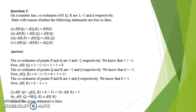Question number 2. On a number line, coordinates of P, Q, R are 3, minus 5 and 6 respectively. State with reason whether the following statements are true or false. First we need to find distance PQ, distance QR and distance PR. Coordinates of P and Q are 3 and minus 5, so distance PQ equals 8. Coordinates of Q and R are minus 5 and 6, so distance QR equals 11. Coordinates of P and R are 3 and 6, so distance PR equals 3.